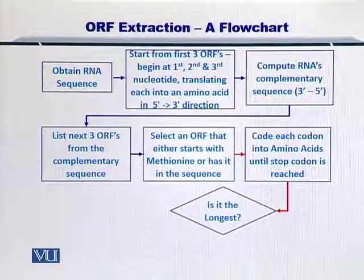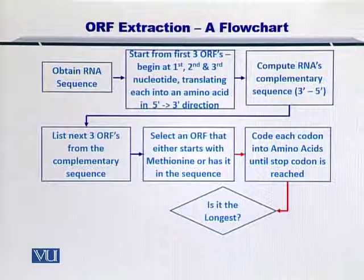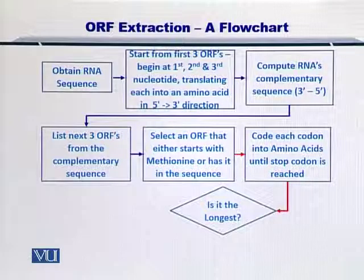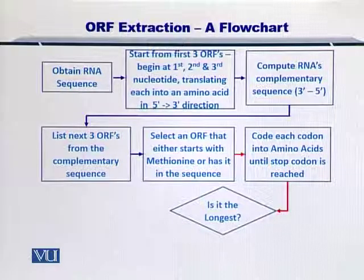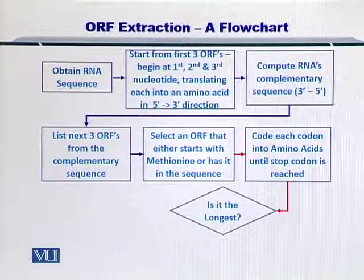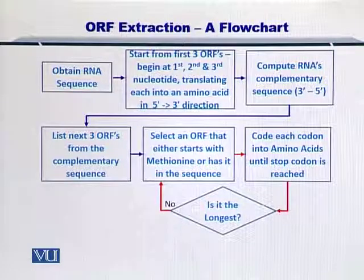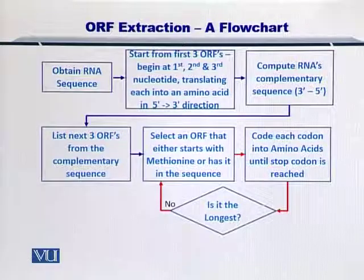But there are six possibilities, and you want to know which one is the longest. So if you know that this is the longest nucleotide sequence encoding for the amino acids, then you select it; otherwise you go back and select a different ORF — say ORF number two or ORF number three.